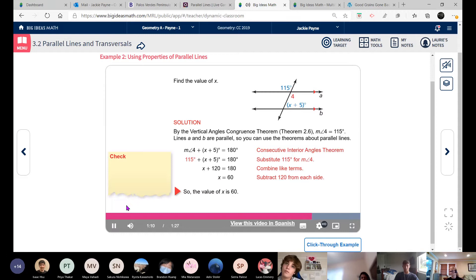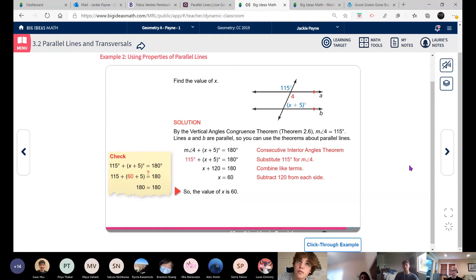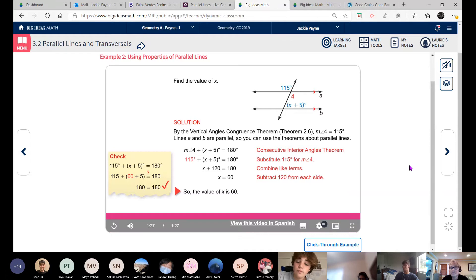You can check your solution by substituting 60 for X in the equation 115 degrees plus the quantity X plus 5 degrees equals 180 degrees. When you simplify you get 180 equals 180. Any questions? So you see how we're going to set up equations and then use our algebra to solve them? Let's do another one.